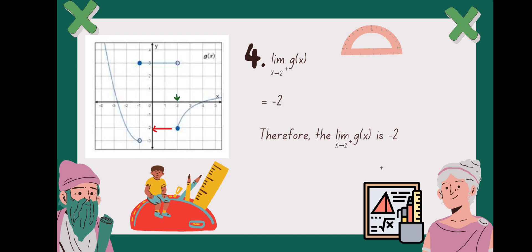Number 4: the limit of g of x as x approaches 2 from the right. First, we locate x equals positive 2 on the right side of the x-axis. As you can see in the graph, the limit of g of x as x approaches 2 from the right is negative 2.